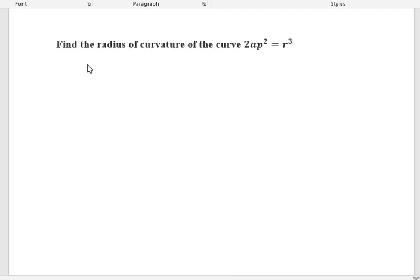So, let us find the radius of curvature of the curve 2aρ² = r³. Solution: We have the equation of the curve 2aρ² = r³.